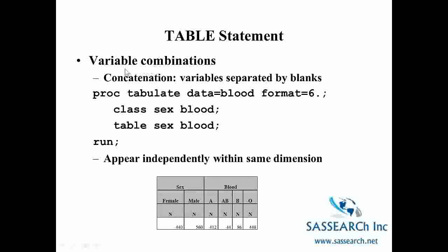Here is another example of a TABLE statement, looking at concatenation where variables are separated by blanks. We always need a CLASS statement telling SAS what variables are used in the PROC TABULATE procedure. Here we just have no comma at all — just the variables sex and blood separated by a space. What we see is that the two variables appear as separate tables within the same dimension. Also note that I've given a format of 6. — meaning columns are six digits wide with no digits to the right of the decimal point.